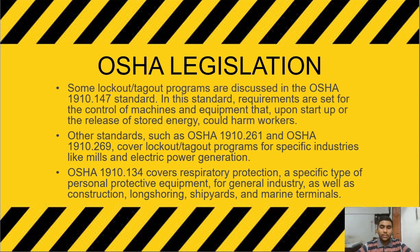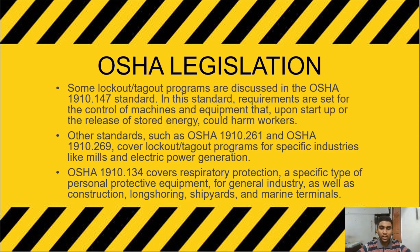Other than that, some lockout programs are discussed in OSHA 1910.147 standards. In these standards, requirements are set for the control of machines and equipment that upon startup or release of stored energy could harm workers. Other standards such as OSHA 1910.261 and OSHA 1910.269 cover lockout programs for specific industries like metals and electric power generators.